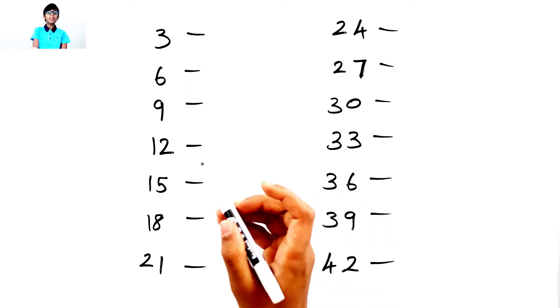To understand this, look at all these numbers. All of these numbers are multiples of 3. That means they can be divided by 3. Let's do one thing.